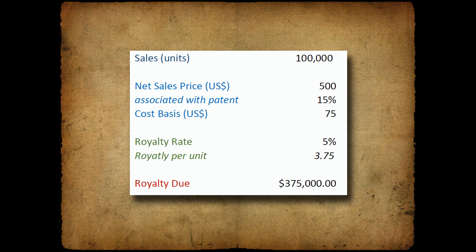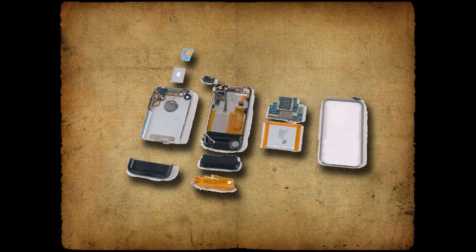In this example, I use a unit sales figure — in this case 100,000 units. The overall net sales price of each unit is $500. Remember, this is an often negotiated point. To address the idea that the net sales price encompasses items not associated with the patent, I take a percentage of that price. This is the situation where the patent might cover an improved GPS antenna for use in a cell phone — the net sales price of the cell phone is based on any number of features, not just the GPS.